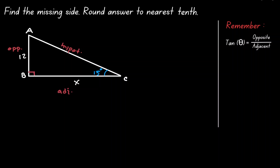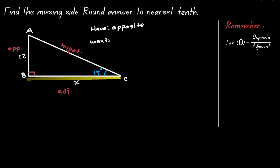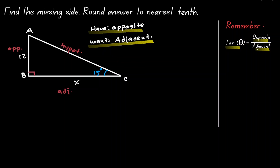Now let's think about what we want and what we have. We have information about the opposite side, and we want to find the measurement of the adjacent side. We can see that under tangent, the numerator is the value we have and the denominator is the value we want, so we can use the tangent ratio for this example.